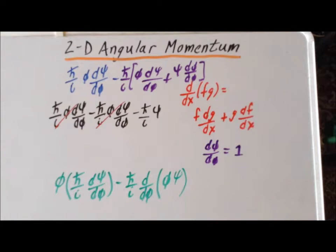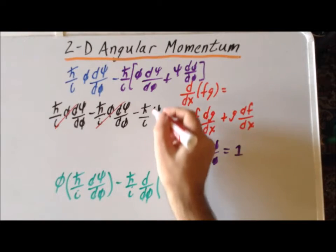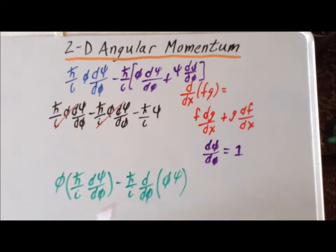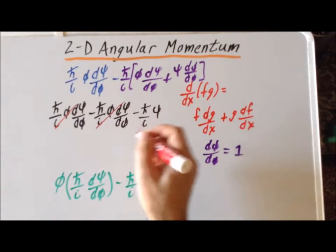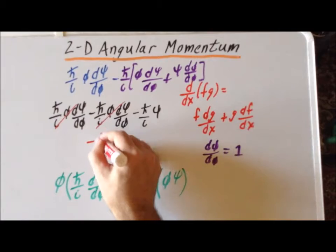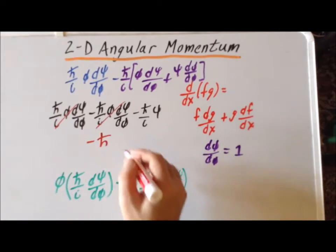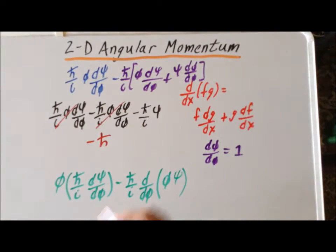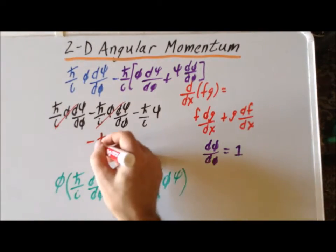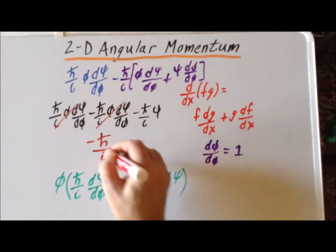We are left with minus h-bar over i times psi. We had only introduced the function psi so that our operators would have something convenient to operate on, so we omit it for the actual commutator result. The commutator for the angle phi and the angular momentum in two dimensions is determined to be minus h-bar over i.